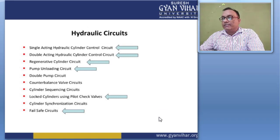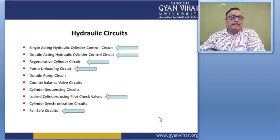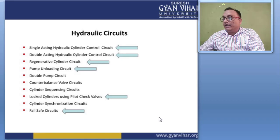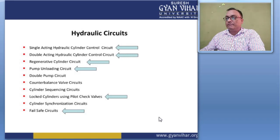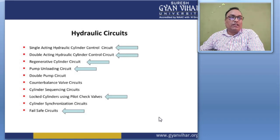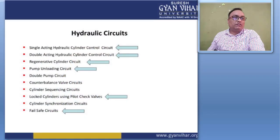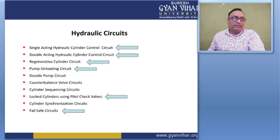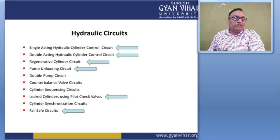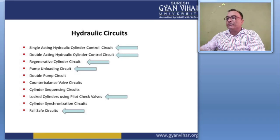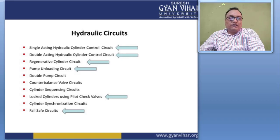The different types of hydraulic circuits discussed in this lecture are: single acting hydraulic cylinder control circuit, double acting hydraulic cylinder control circuit, regenerative cylinder circuit, pump unloading circuit, double pump circuit, counterbalance valve circuit, cylinder sequence circuit, lock cylinder using pilot check valves, cylinder synchronization circuit, and fail safe circuits.